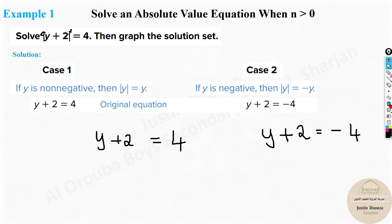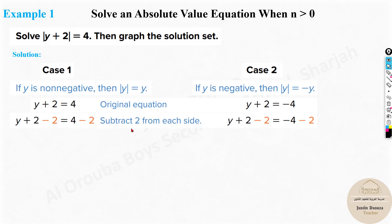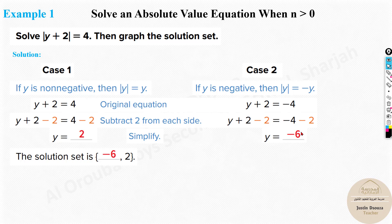Now solving both cases: for y plus 2 equals 4, take 2 to the other side — y equals 2. For y plus 2 equals negative 4, take 2 to the other side — y equals negative 6. So the two solutions are y equals negative 6 and y equals 2. Write the smaller number first, then the bigger number.